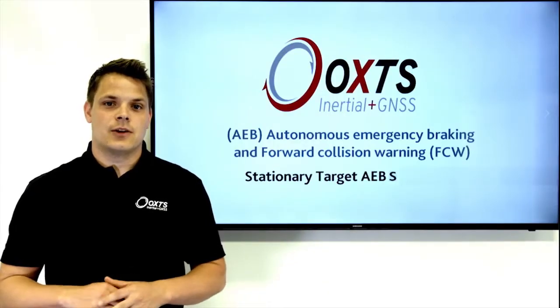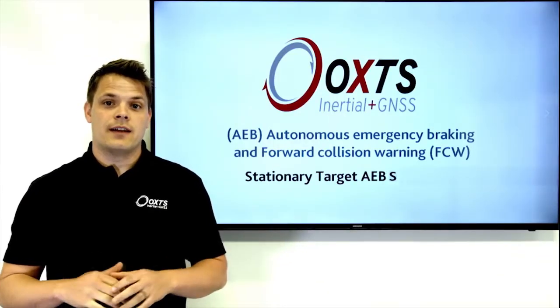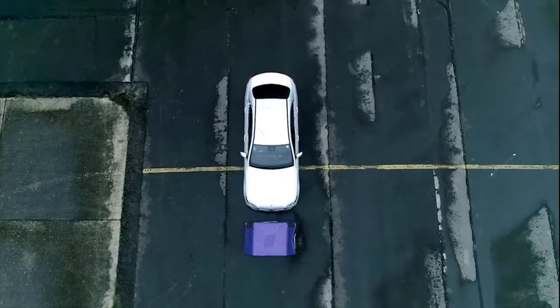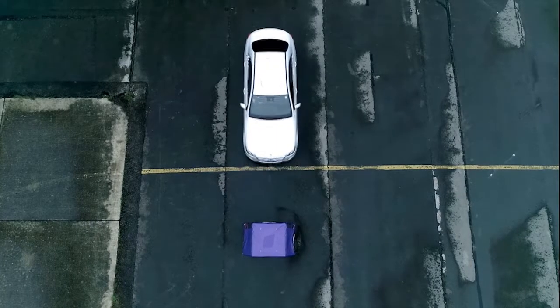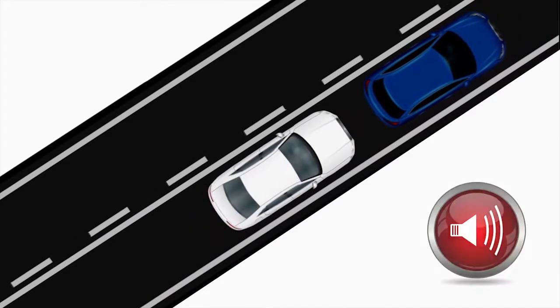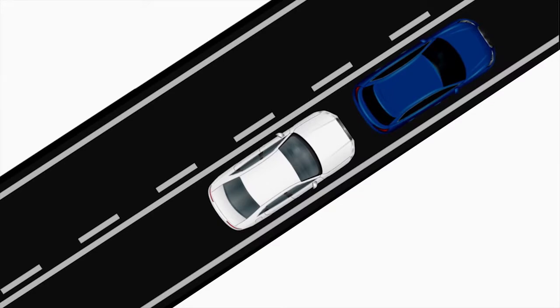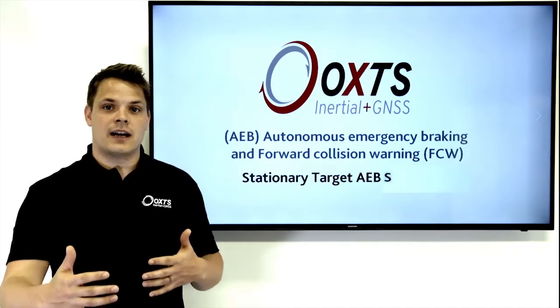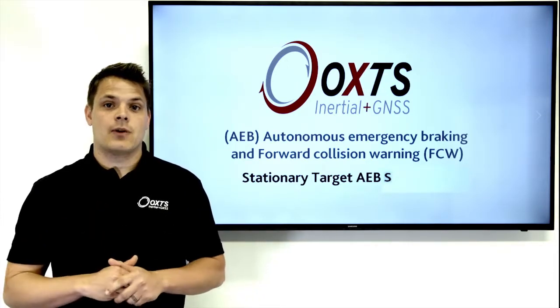For the AEB tests — autonomous emergency braking where the target is stationary — we can use one RT in our hunter vehicle and survey the precise point of our soft target position to one centimetre accuracy. The test requires us to drive the hunter vehicle at a specific precise speed and capture when the autonomous braking alert came on and what our stopping or finishing point was for the vehicle. We calculate those to one centimetre accuracy and get a time to collision value that we can put in our test report afterwards.